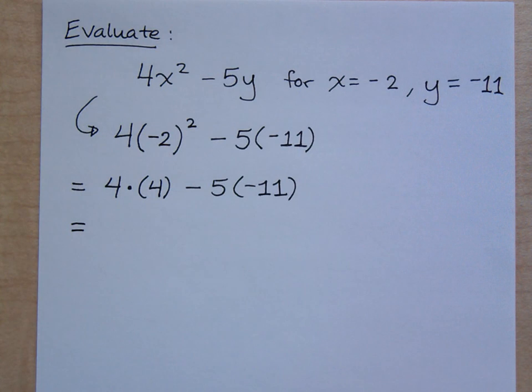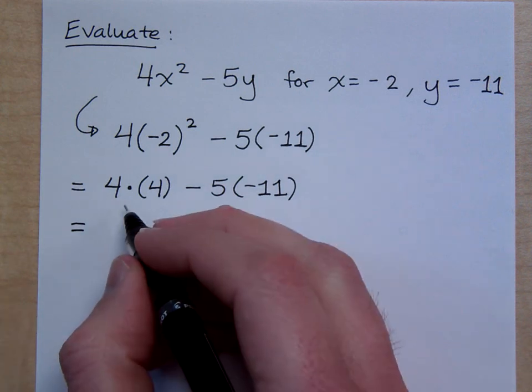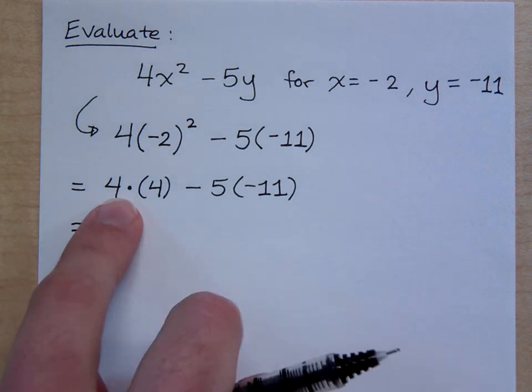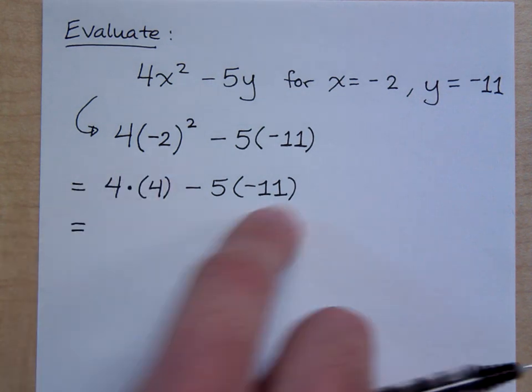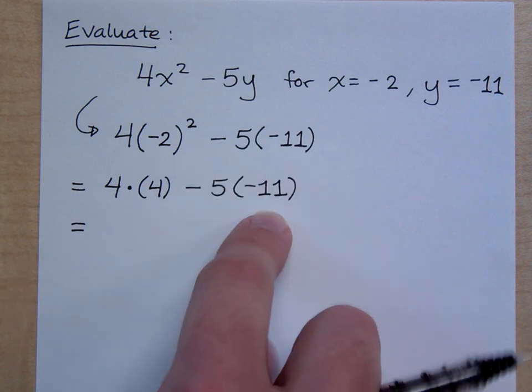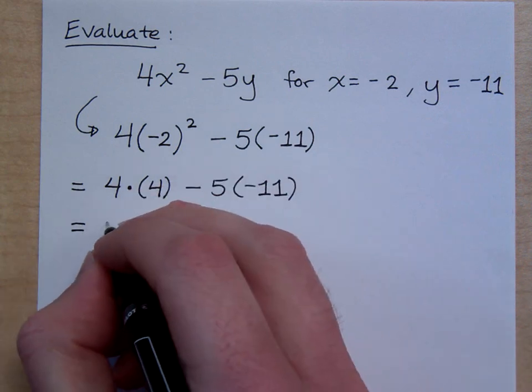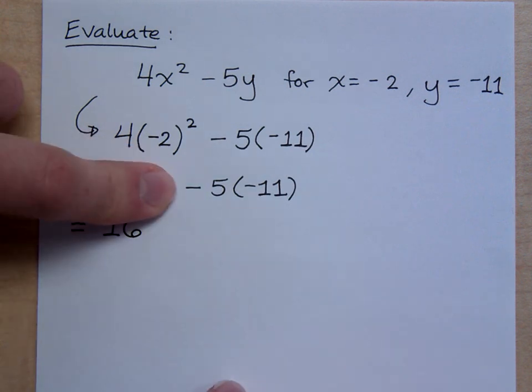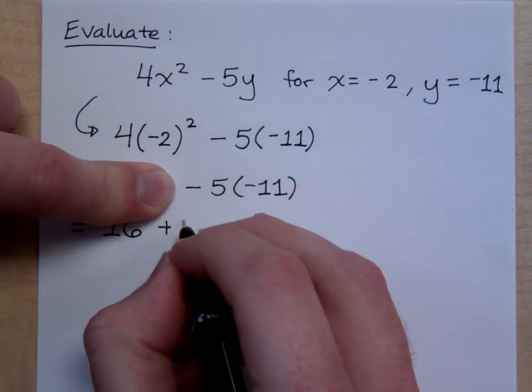And I've got the minus 5 times negative 11. Okay, exponents are done. Not really anything to do with the parentheses. I then go to multiplication and division from left to right. So what do I have here? Multiplication. Remember how gluey it is? How sticky it is? So this is connected here. The 4 times 4 and the 5 times 11 is connected. So what's 4 times 4? Watch your signs. This kind of goes back to what we said earlier. I've got a negative 5 times a negative 11. What is that? Positive 55.